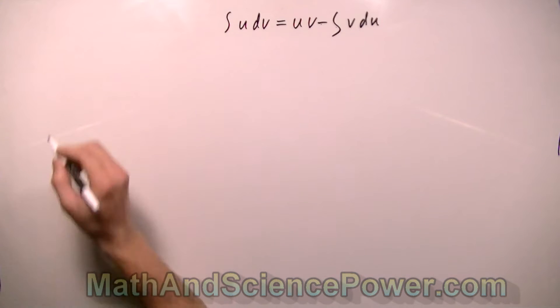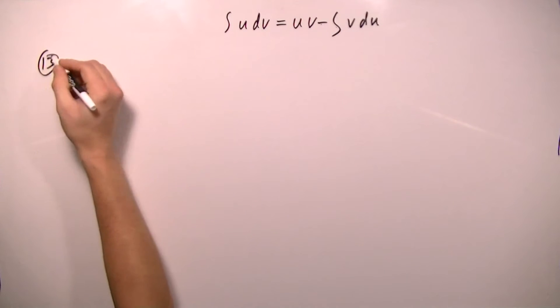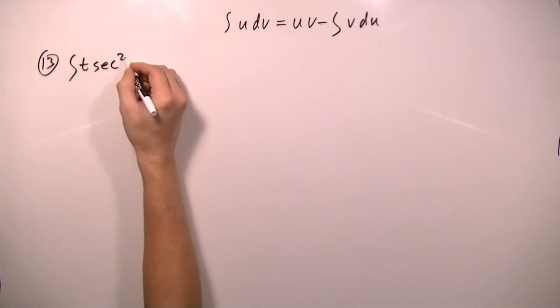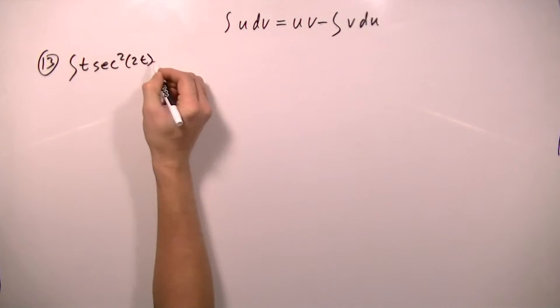Okay, we're going to integration by parts. And number 13 asks us to find the integral of t secant squared 2t dt.